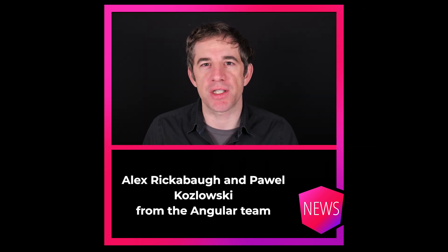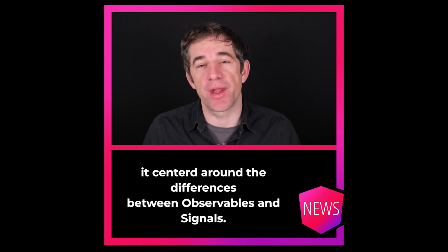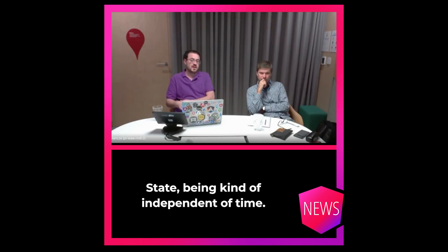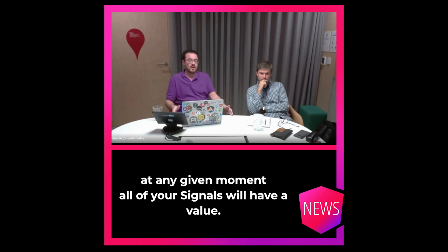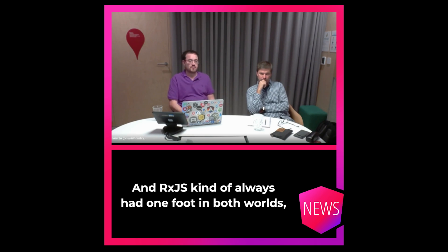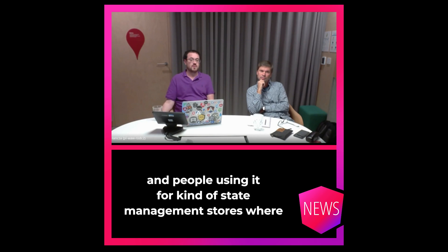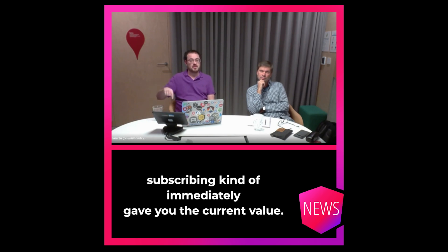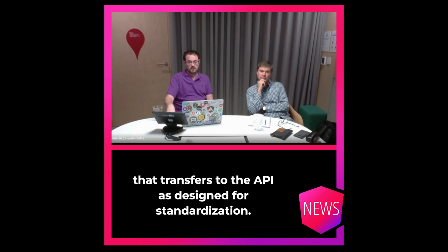Alex Rickerbo and Pavel Koslowski from the Angular team continued that discussion with Dominic, and it centers around the differences between observables and signals. State is kind of independent of time — your application is in some state at any given moment, and all of your signals will have a value. Events have some concept of not just what happened, but when it happened. RxJS always had one foot in both worlds, with things like BehaviorSubject for state management stores where subscribing immediately gave you the current value. As far as I understand it, that is not really a capability that transfers to the API as designed for standardization.